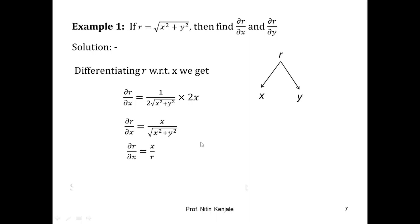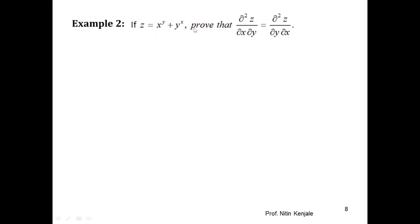Consider another example: here z is defined as x^y + y^x. We have to prove that ∂²z/∂x∂y = ∂²z/∂y∂x. Since z is a function of x and y, its derivatives with respect to x or y will be partial.